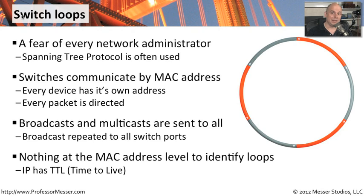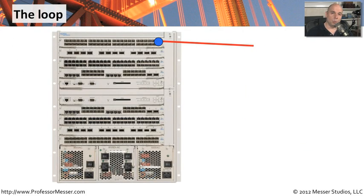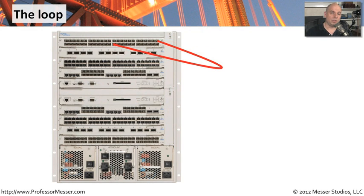So obviously, if we create a loop, it's going to be there until we remove that loop from the network. If we're simply plugging in one device to the network and a broadcast comes out onto the device on the other side, the packet ends right there — it doesn't loop back into the network, so there's no issue. But if we happen to misconfigure a connection on the switch, or we happen to take one end of a cable and loop it around and plug it directly back into the switch, we might have a problem.